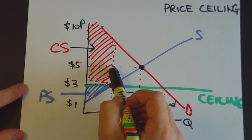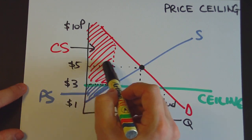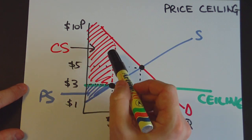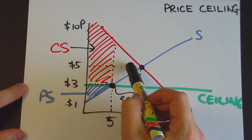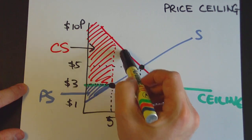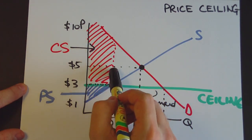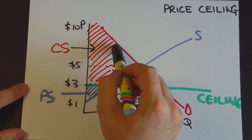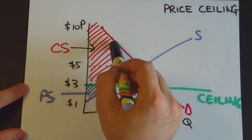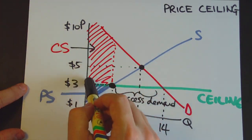Hopefully the size of this extra rectangle compensates the consumers for the lost surplus here. Basically these buyers miss out on buying the product, so they lose all of their surplus here. Only these customers actually get to enjoy the consumer surplus - they get a whole lot of consumer surplus, this area here.